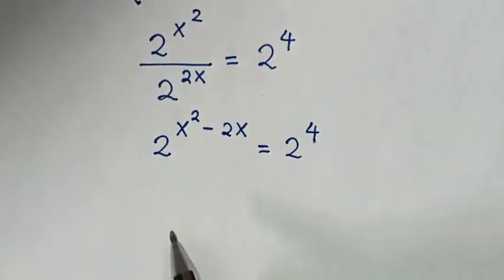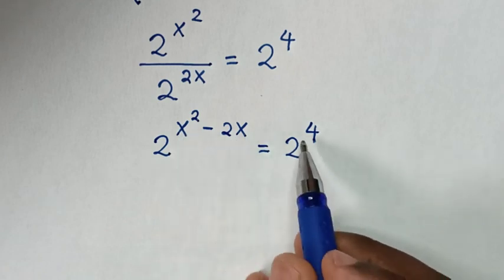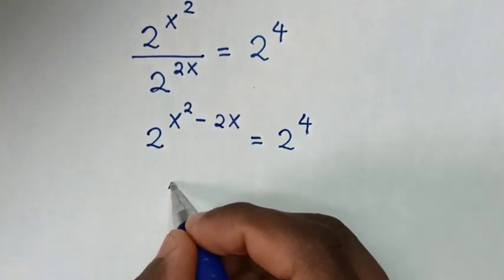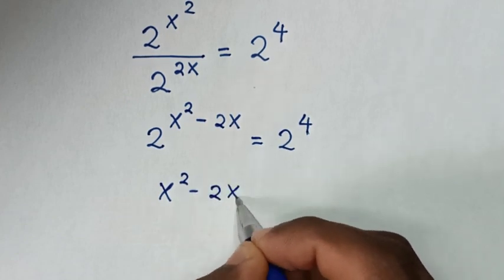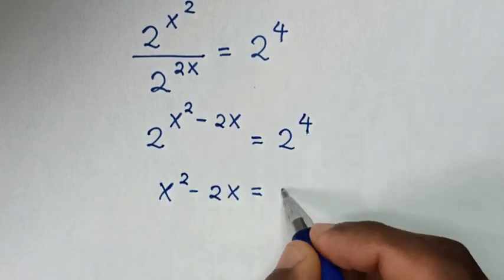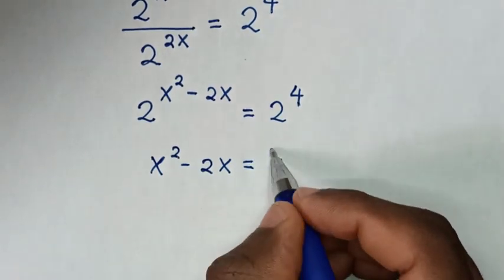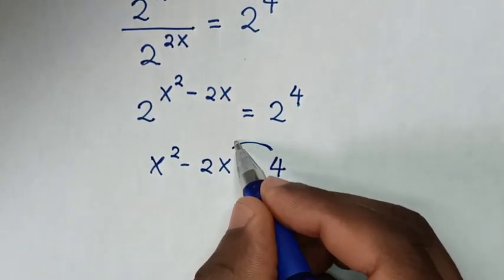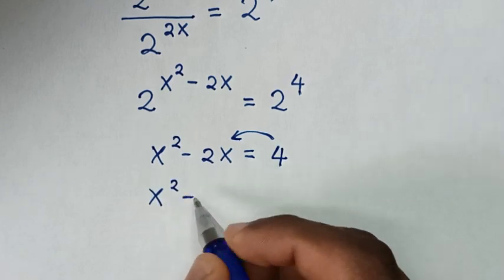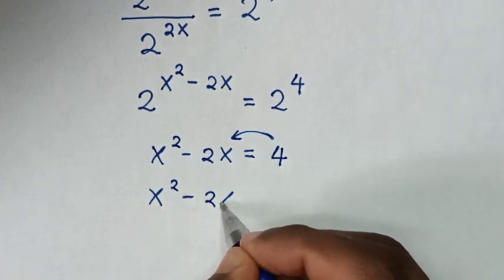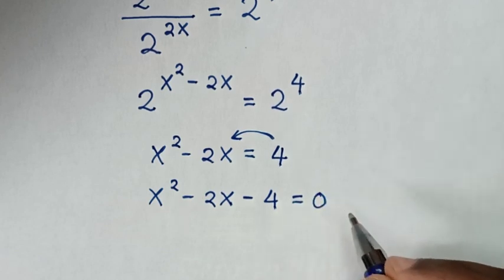Then in the next step, because we have the same base of 2, we'll compare these powers. Then it will be x squared minus 2x is equal to 4. Then we'll take this 4 to the left side, so it will be x squared minus 2x minus 4 is equal to 0.